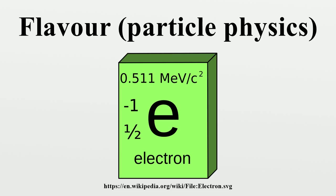The terms strange and strangeness predate the discovery of the quark, but continue to be used after its discovery for the sake of continuity, with strangeness of antiparticles being referred to as plus one and particles as minus one, as per the original definition. Strangeness was introduced to explain the rate of decay of newly discovered particles, such as the kaon, and was used in the eightfold way classification of hadrons and in subsequent quark models.